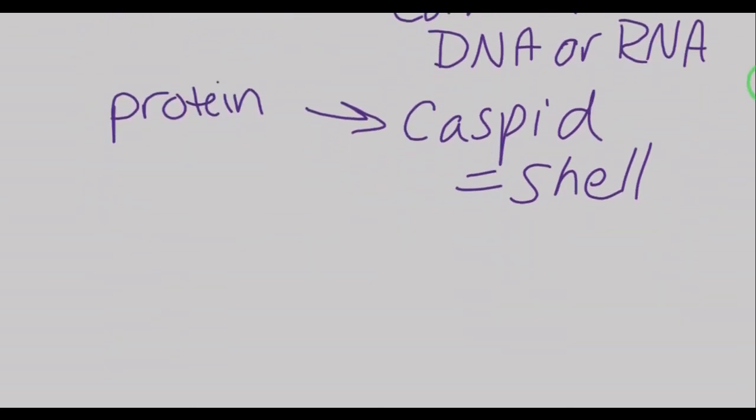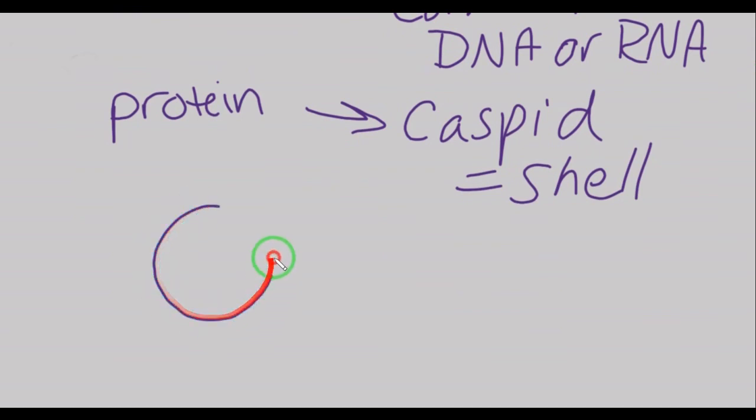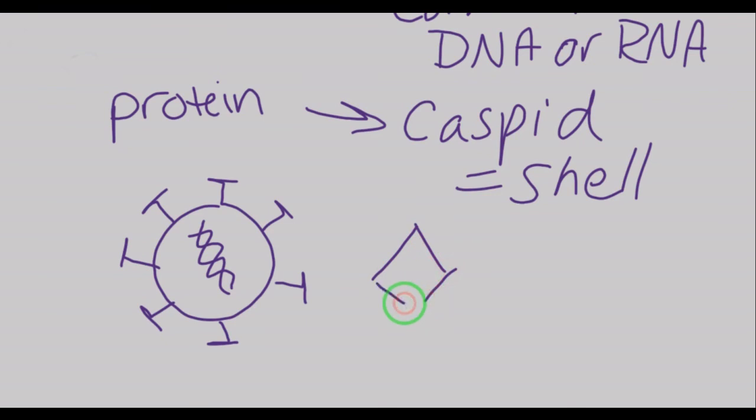And it basically just encloses the DNA or the RNA that's floating around in the virus. Now, sometimes those caspids are pretty fancy looking. You can get ones that are sort of round with these projections sticking off of them, and they have their DNA or RNA in the middle. And some of them even kind of look like little critters, kind of like little spider things like this, and they have their DNA or RNA in the middle.